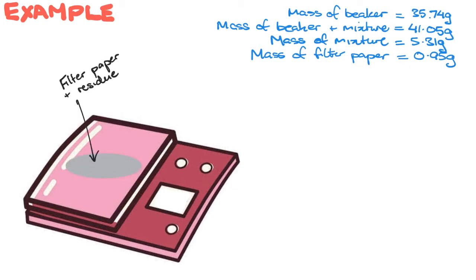Let's say that the mass of the filter paper plus the residue, which is your barium sulfate, equals 5.12 grams. We can then determine the weight of the barium sulfate. So the mass of the barium sulfate should be 4.17 grams, which is really just the difference.